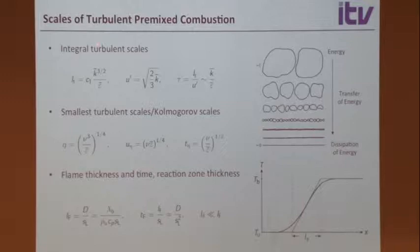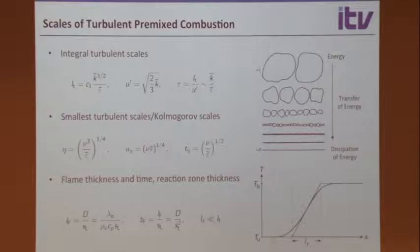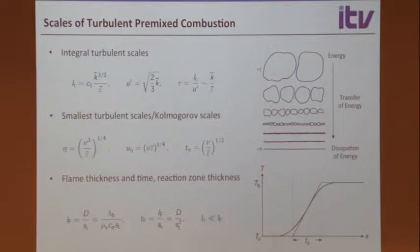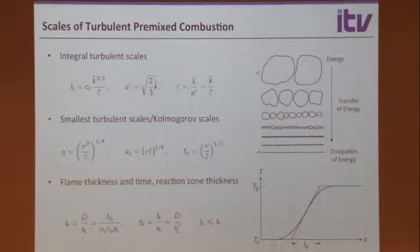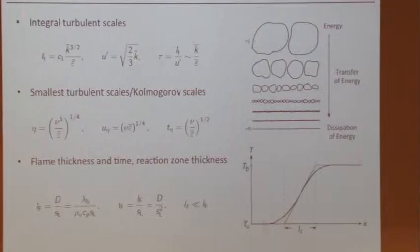These are the scales, all listed here. We have the integral turbulent scales — these are the scales of the large turbulent eddies: L_T, U prime, and a time scale. We often use k and epsilon to build these scales. The smallest turbulent scales are the Kolmogorov scales, which depend on nu and epsilon.